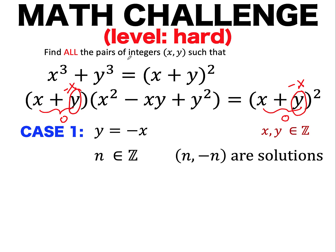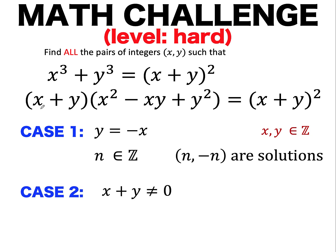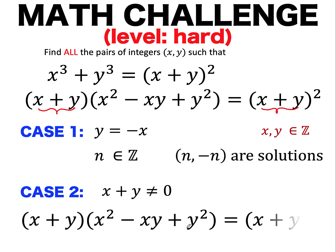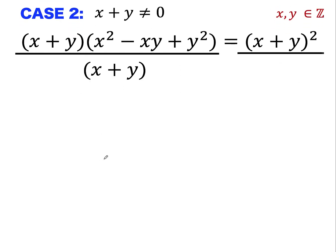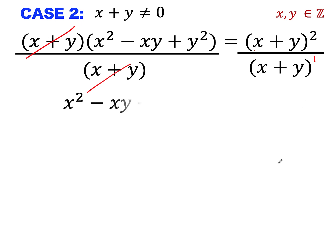Please take note that we are after the integer solutions. Now for the second case, what happens if the sum x plus y is not equal to zero? We can divide both sides of the equation by x plus y, since the denominator is not zero — it's valid to divide both sides by a non-zero number. So the (x+y) factor cancels, and the right side becomes x plus y, while the left side becomes x squared minus xy plus y squared.